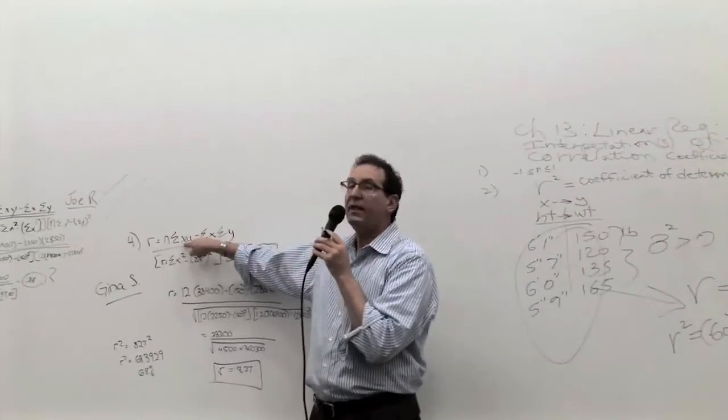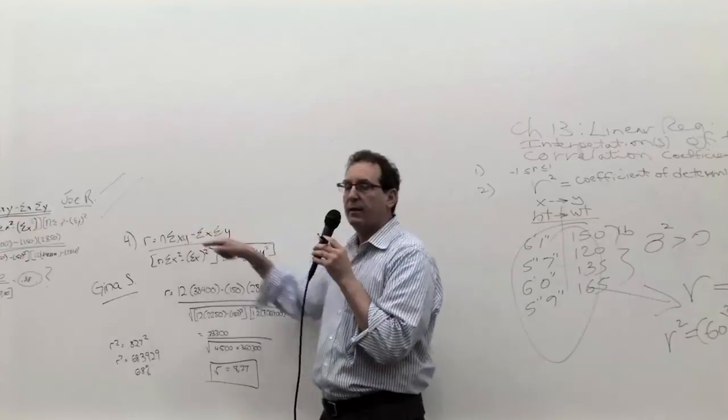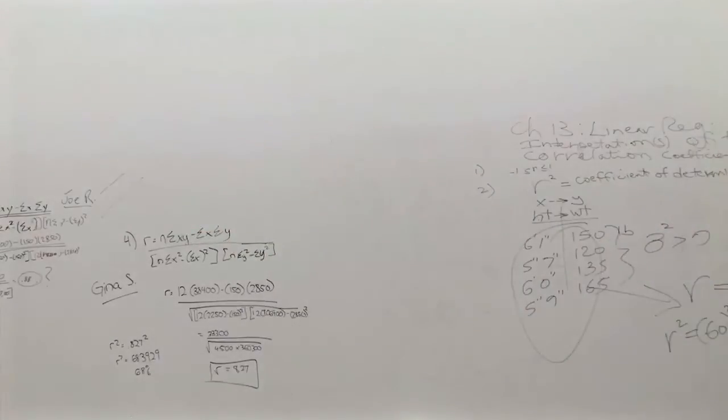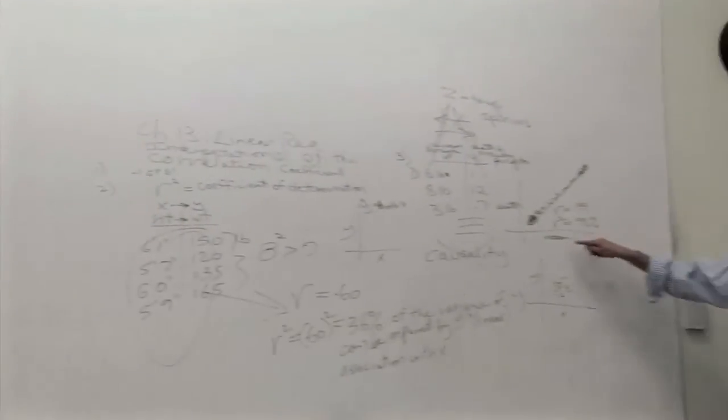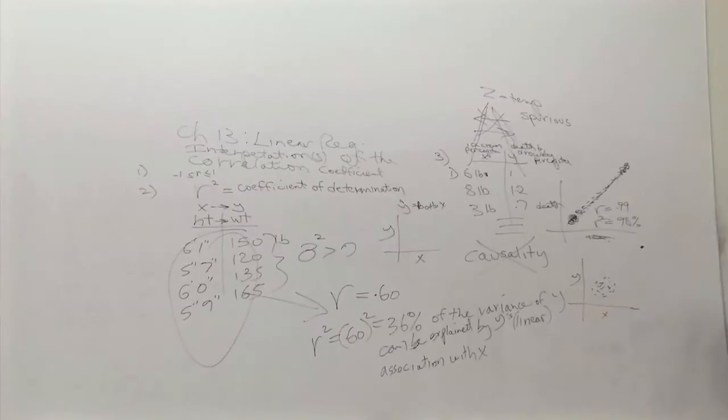Now, let's go back to the formula. The formula, one of the main parts of the formula is X times Y. And because of that, a large X times a large Y is going to be a giant number. And that's going to have a very overwhelming effect on the correlation.